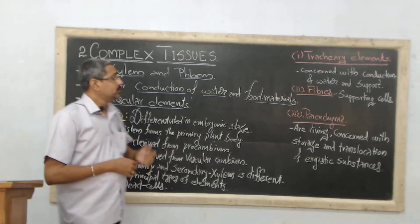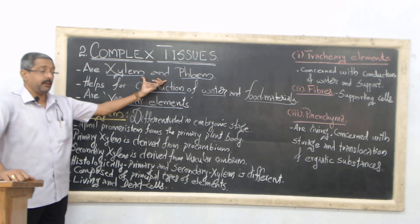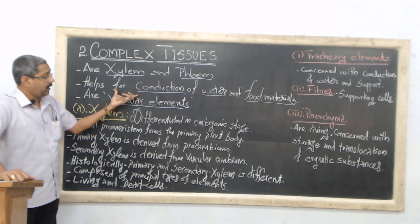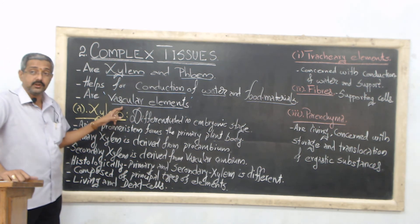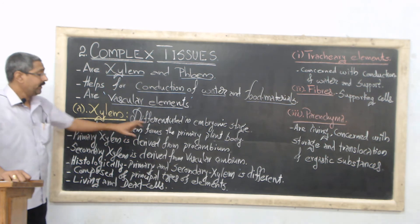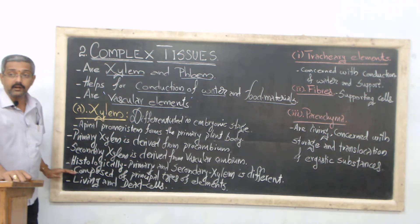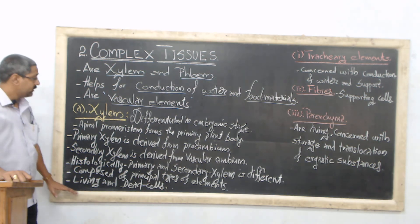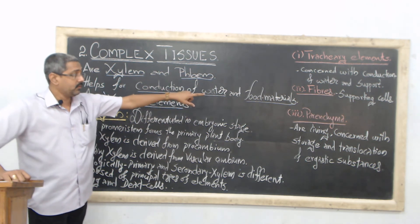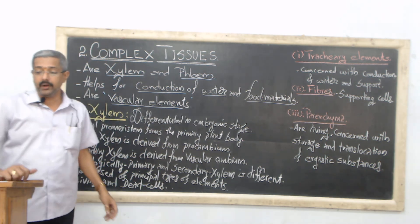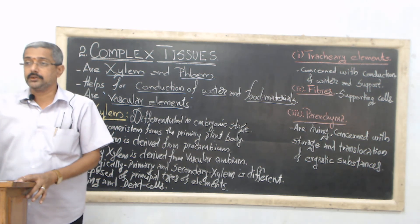In conclusion, complex tissue consists of two types — xylem and phloem — commonly called vascular elements. Xylem performs conduction of water and food materials, is differentiated at the embryonic stage, and exists as primary xylem and secondary xylem, which are histologically different in nature. Xylem consists of both living and dead cells, and is categorized into three types: tracheary elements, fibres, and parenchyma. In the next session we will discuss tracheary elements in detail. Thank you.